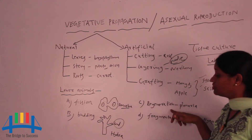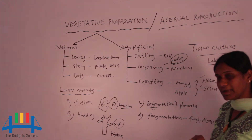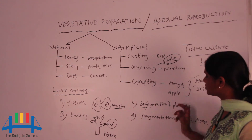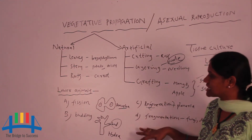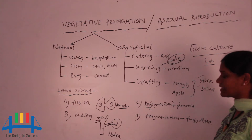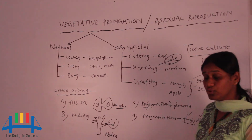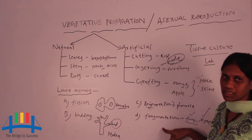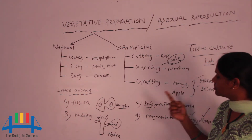Another method is regeneration. In planaria, which is an invertebrate lower animal, if the body is cut into three or four parts, each part produces a new planaria. This is called regeneration — from one body, a number of new planarias are produced. The last method in lower animals is fragmentation, seen in fungi and algae. In fragmentation, just like regeneration, from one body part many new individuals or organisms are produced.